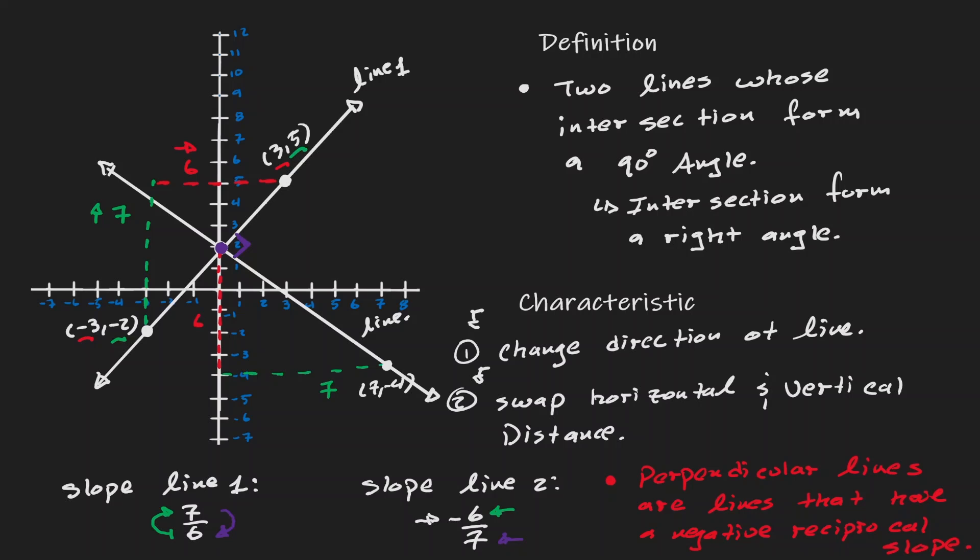Because those were the two characteristics that we wanted to give to our perpendicular lines. We wanted to change the direction of the line, and then we wanted to switch the horizontal and the vertical distance. And by doing so, we can just say that perpendicular lines are lines that have a negative reciprocal slope.